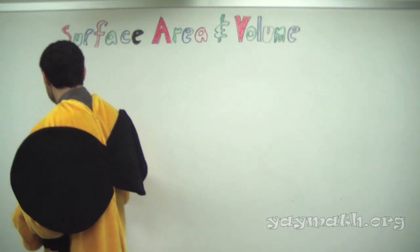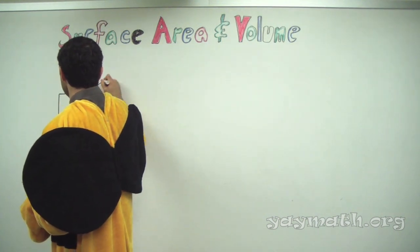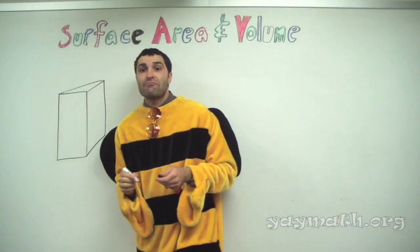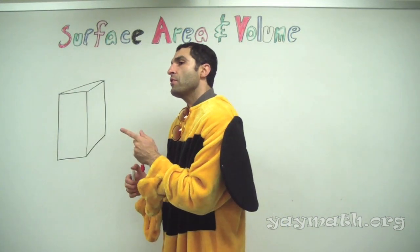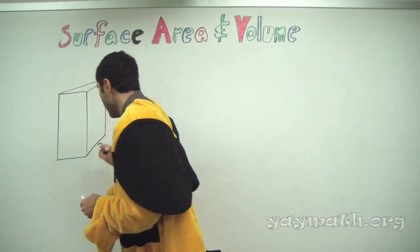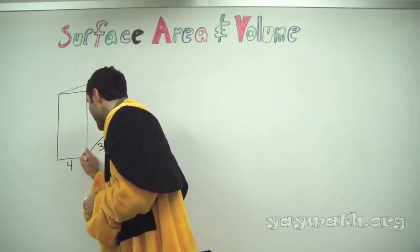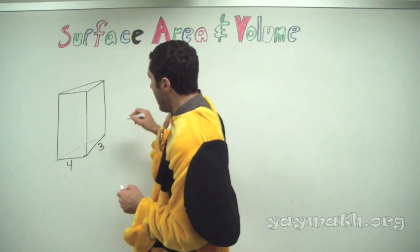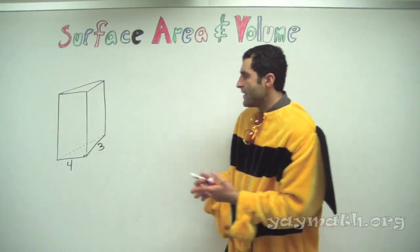Let's make it an easy right triangle — a 3-4-5 right triangle. We have a right angle down here, and we have back lines for perspective. Let's make the height 10 again. This is called a triangular prism — you turn 'triangle' into an adjective: triangular prism.